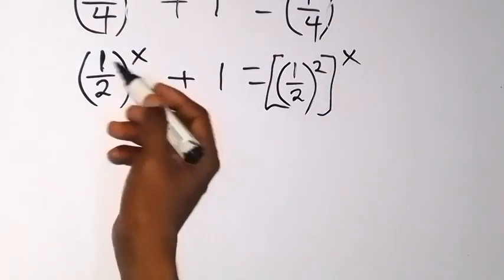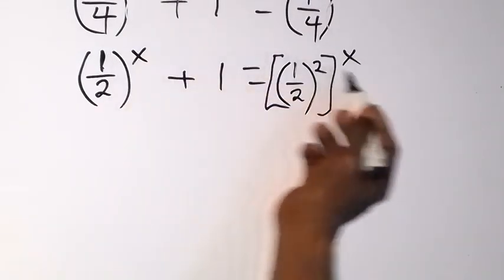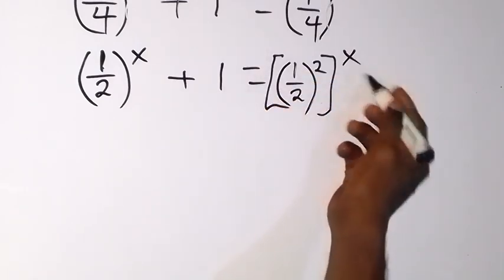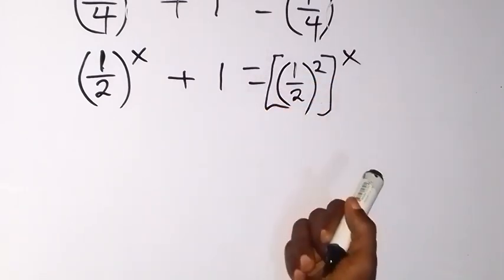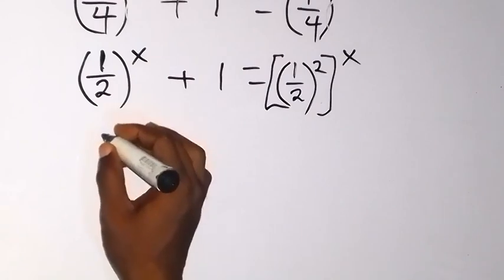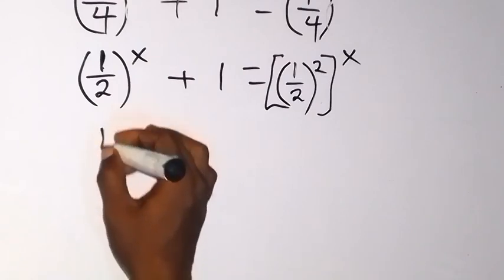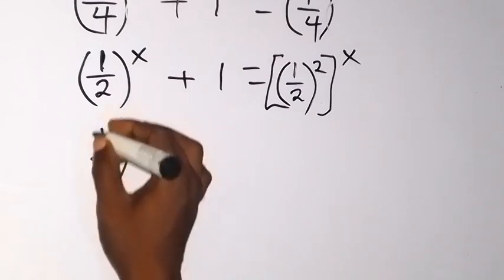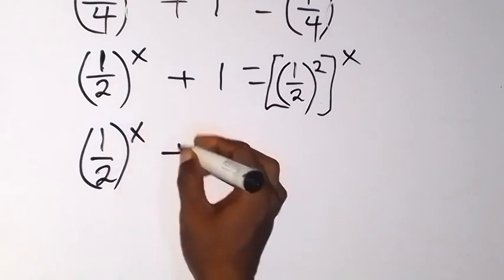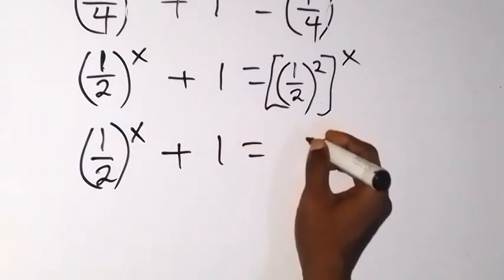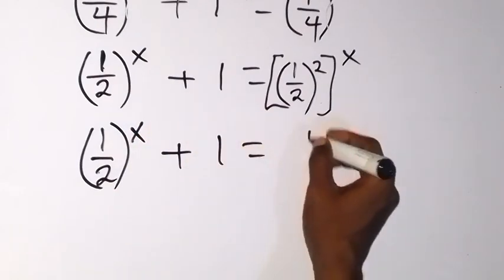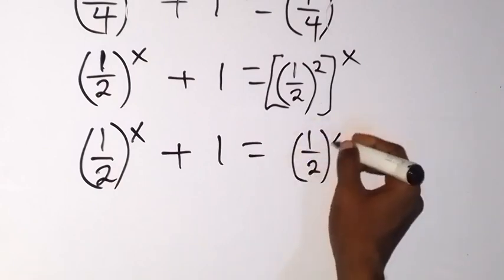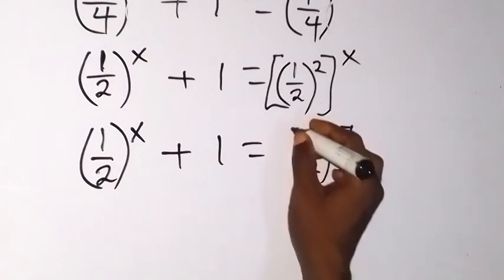From there we can interchange this power so that we have 1 over 2 raised to power x. When we interchange this power we have not violated any rule — we have 1 over 2 raised to power x plus 1, equals 1 over 2 raised to power x, all raised to power 2.